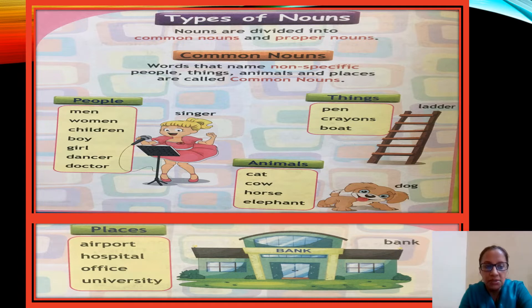Let's read the examples. Under people: men, women, children, boy, girl, dancer, doctor and singer. All these are common nouns.